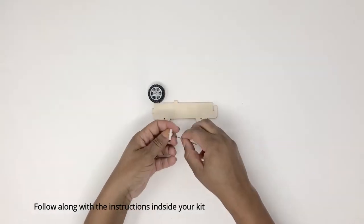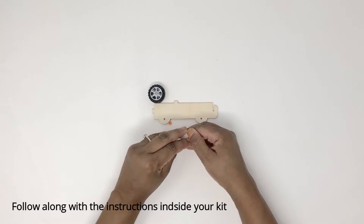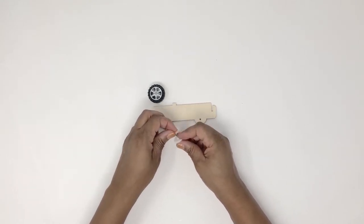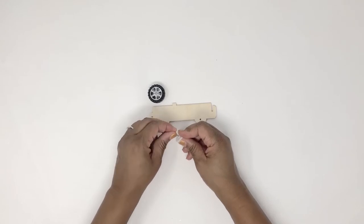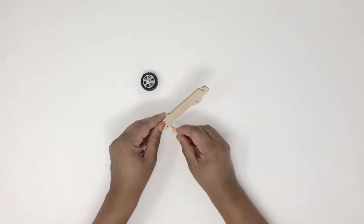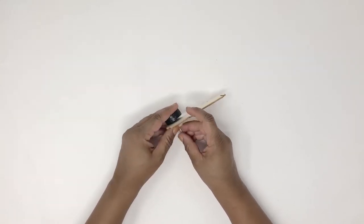First we're going to start with our back wheel. We're going to attach the white gear and the orange stopper to the axle. Now note that this white gear is very important for this car to run. Without it the car will not drive.